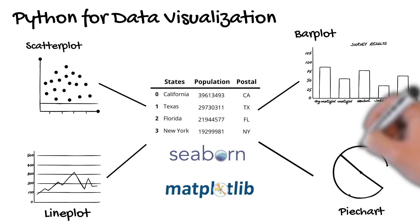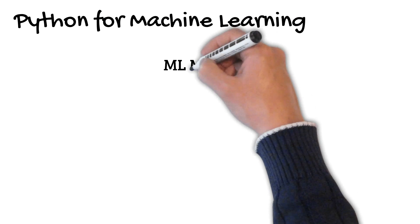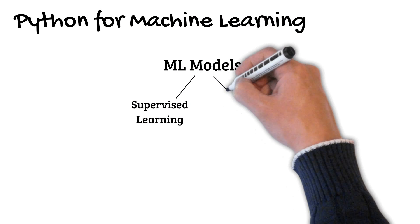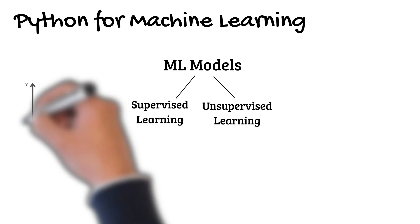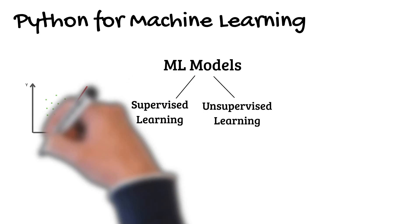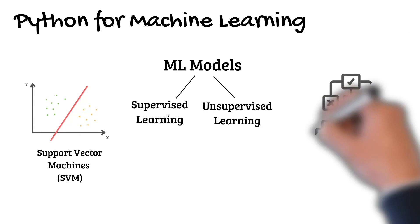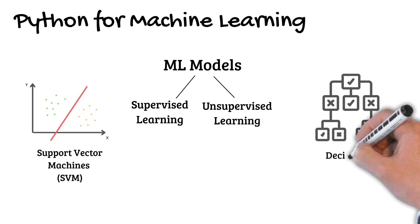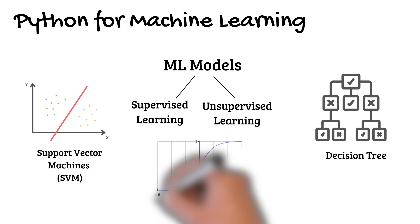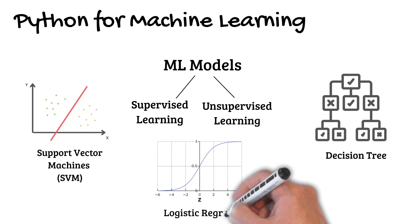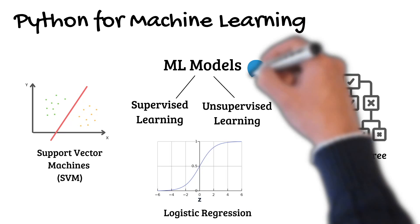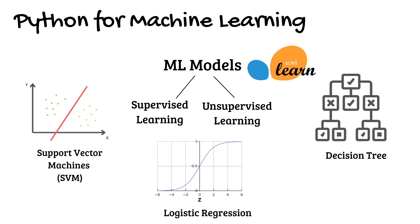Finally, once your data is prepared, you have to build your model. There are different machine learning algorithms, and they are classified into supervised and unsupervised learning. Some of the most common algorithms are SVM, decision tree, and logistic regression. You can implement all of this in Python by using the scikit-learn library.